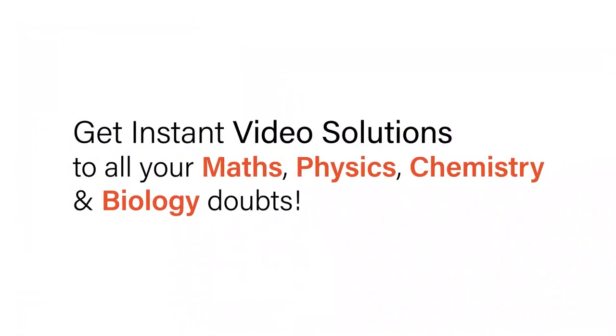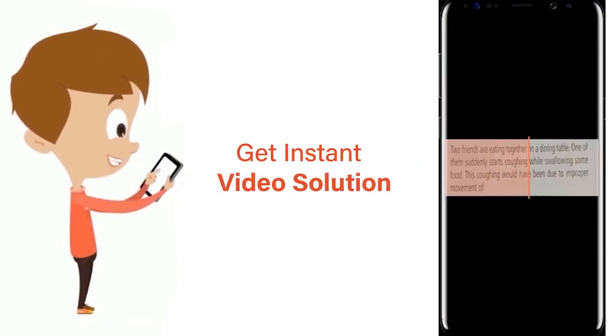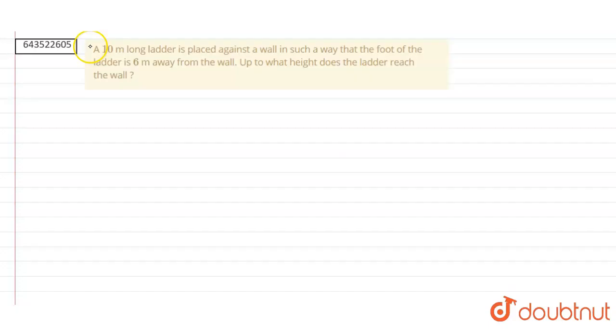With Doubtnet, get instant video solutions to all your maths, physics, chemistry, and biology doubts. Just click the image of the question, crop the question, and get instant video solution. Download Doubtnet app today. So the question is: a 10-meter long ladder is placed against a wall